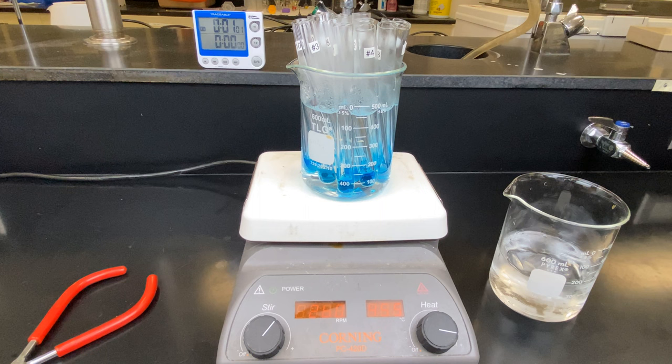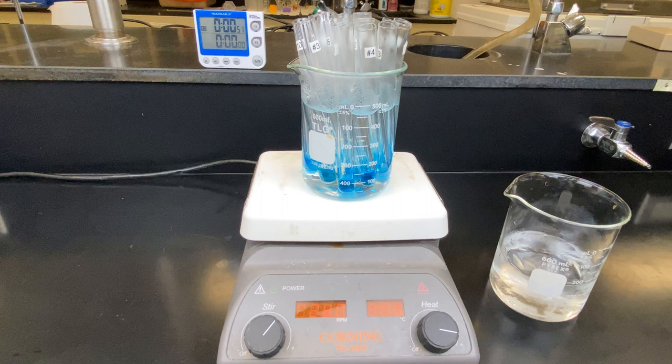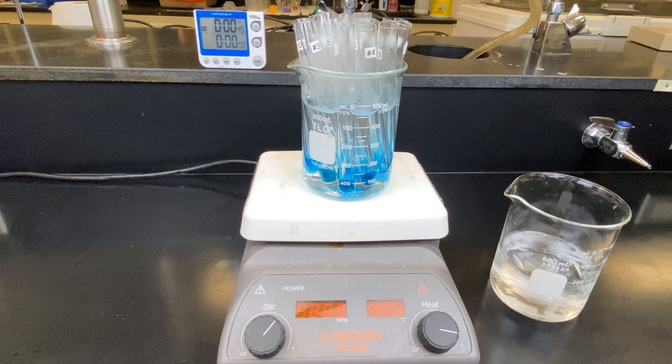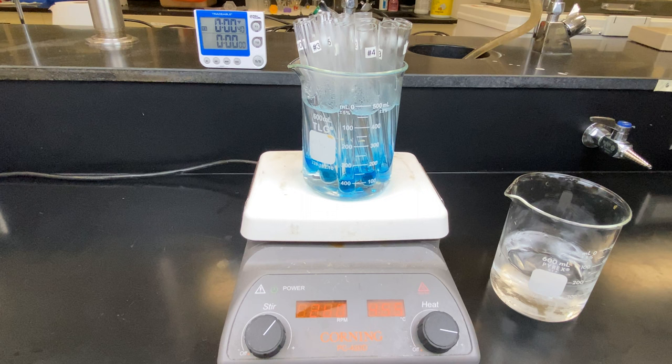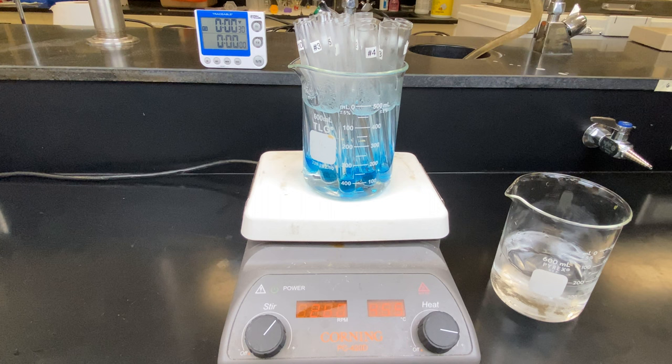Notice some other items in this image. On the left, we have beaker tongs. When the two minutes is up, I will use the tongs to lift the beaker off the hot plate to remove that heat source. Do not use your hand. You could potentially burn yourself. On the right side, you can see another beaker. It contains water and ice. After I remove the tubes from the hot plate, I want the heating to stop. Therefore, I will transfer all the test tubes into the beaker of ice-cold water.